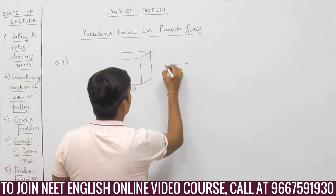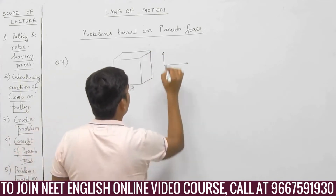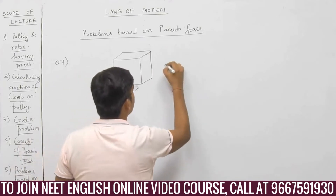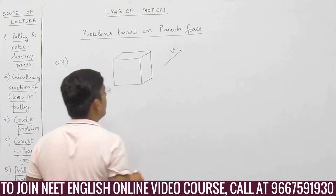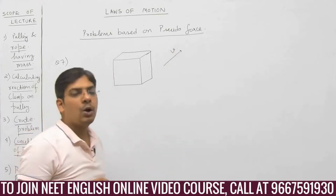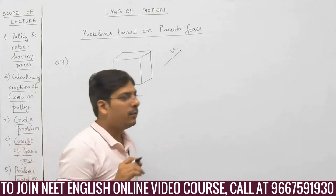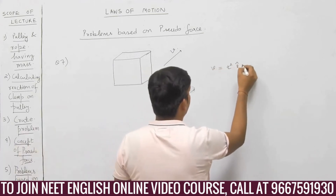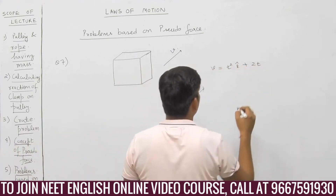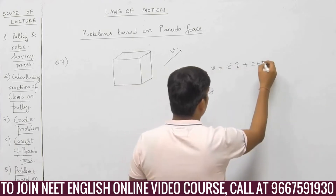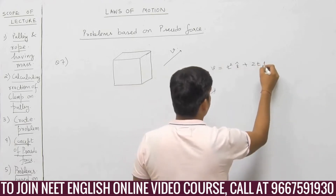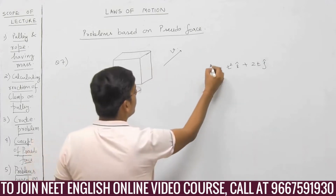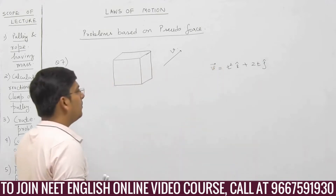This cube is moving with some velocity in two dimensions. And that velocity is not constant — that velocity is a function of time. It is t² î + 2t ĵ. This is the velocity in vector form.